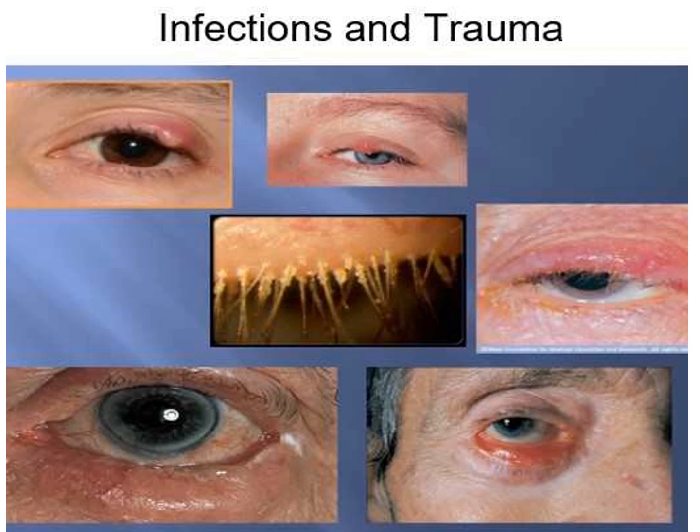Stye infections involve a hair follicle on the eyelid, usually caused by staphylococci — gram-positive cocci in irregular grape-like clusters. A swollen red mass forms on the eyelid that often produces purulent exudate. Other infections include conjunctivitis or pink eye, trachoma, and keratitis.